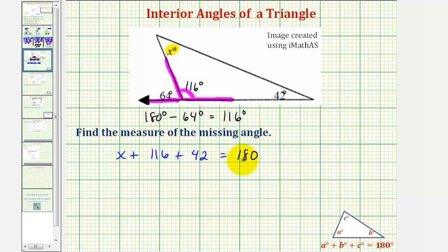Notice how we're not including the degrees in the equation because the degree is already included on the variable. So here we have x plus 116 plus 42 is equal to 158.